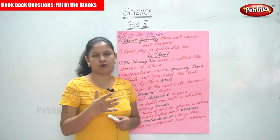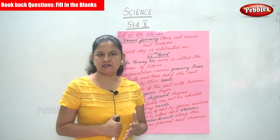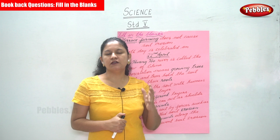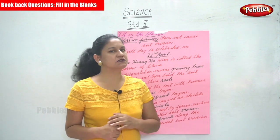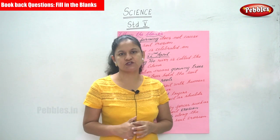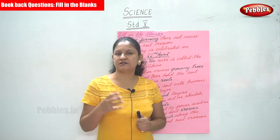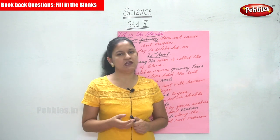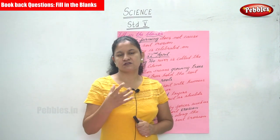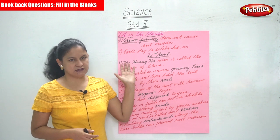Earth Day, or the Van Mahotsava week, is celebrated every year on 22nd April. On this particular day, new saplings are being planted all over the world. Each Indian citizen is supposed to plant a new sapling, because plants are responsible for the oxygen that we breathe. It is always good to plant new trees, so the government has established 22nd of April as Earth Day.